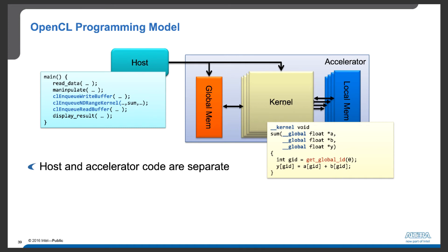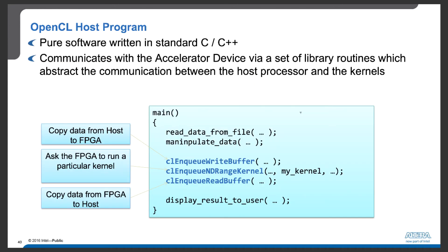As you can see, the host application and the accelerator code are separate. The host program is pure software written in standard C or C++. The host communicates with the accelerator device through OpenCL API calls, which abstract the communication between the host processor and the kernels on the device. We use cl_enqueueWriteBuffer to copy data from host to FPGA, cl_enqueueNDRangeKernel to run a kernel on the FPGA, and then copy results back from FPGA to host.